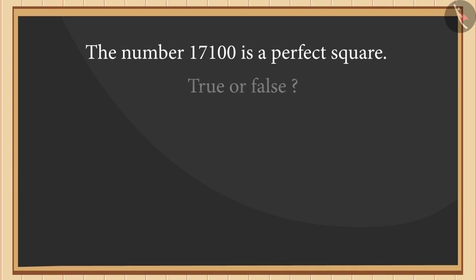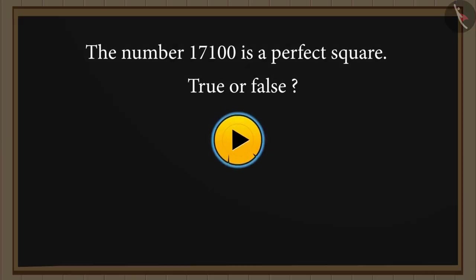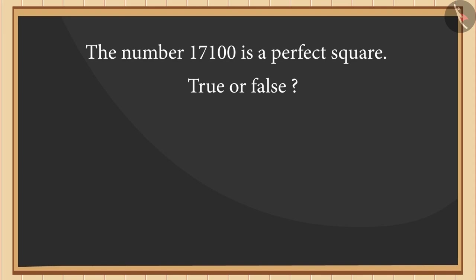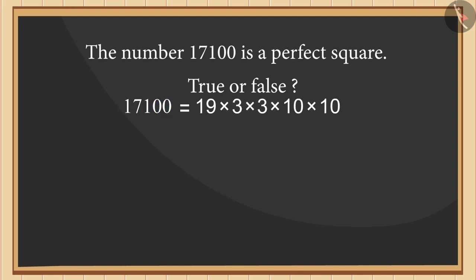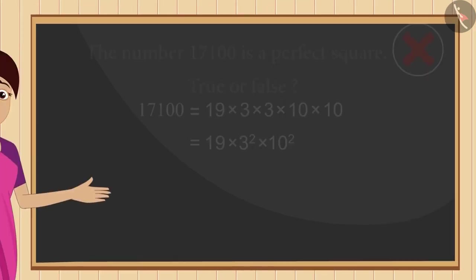Now look at this statement. You can pause the video here and think of an answer. If you have assumed this statement to be true, then you may have thought that the number of zeros at the end is even, so it should be a perfect square. But this is wrong. We know that the number of zeros at the end of a perfect square must be even, but it is not necessary that any number ending with an even number of zeros will be a perfect square. Let us factorize the given number. We have seen that we cannot write this number as the square of any whole number. This number is not a perfect square. Therefore, this statement is false.